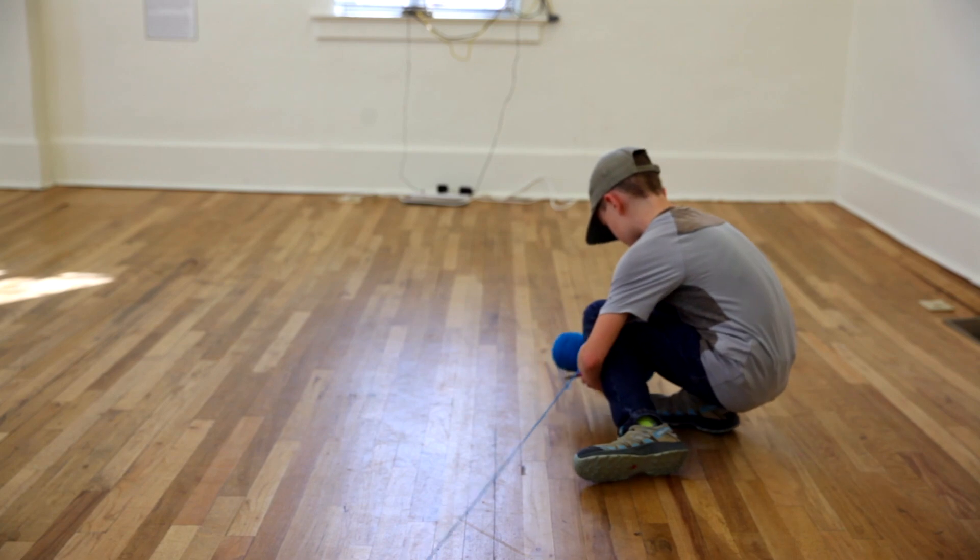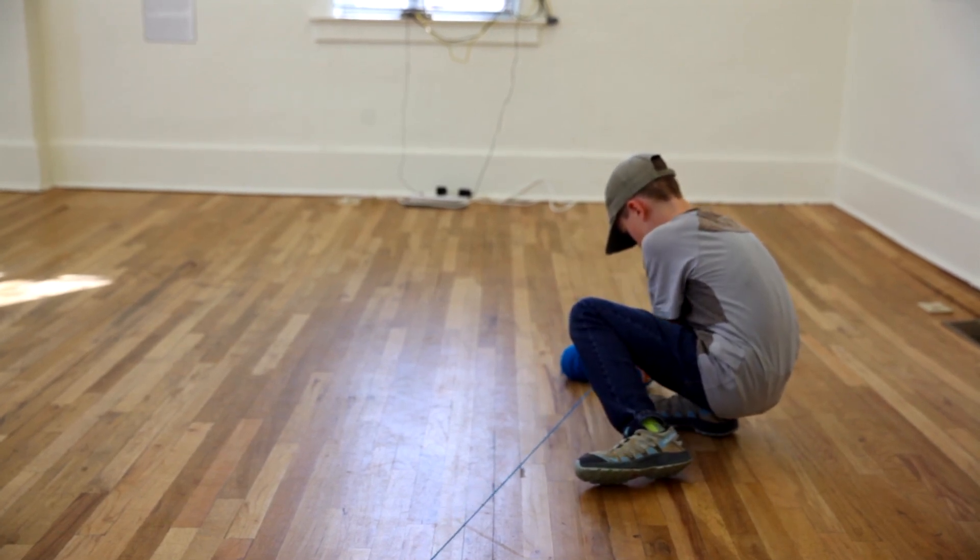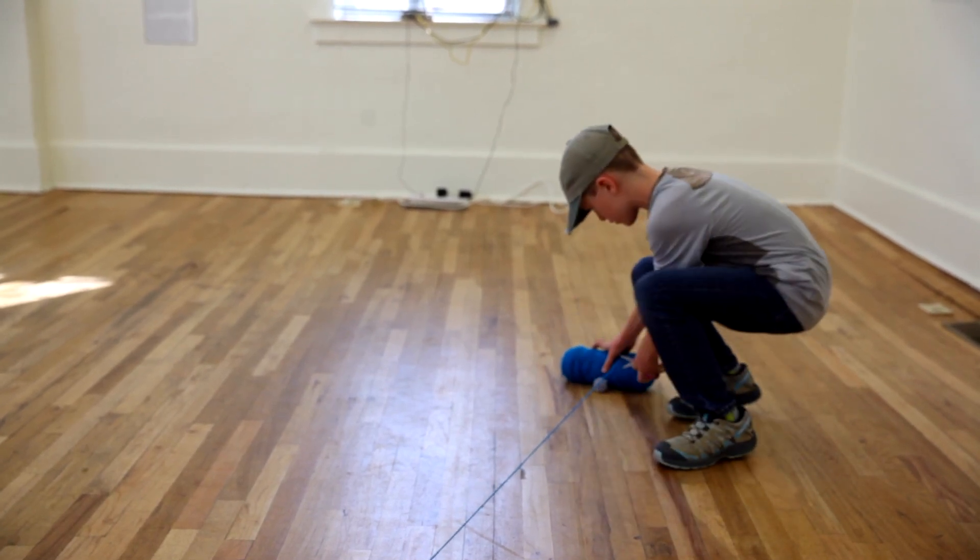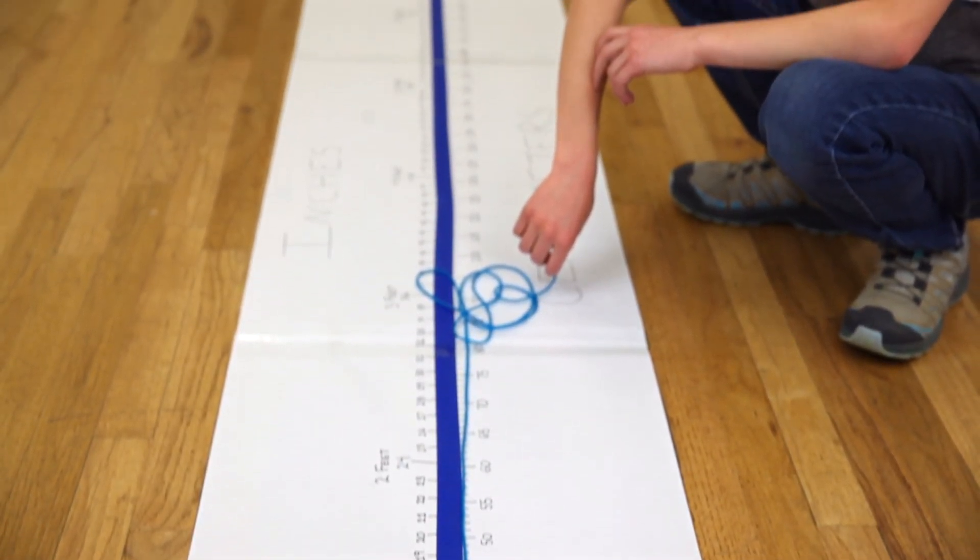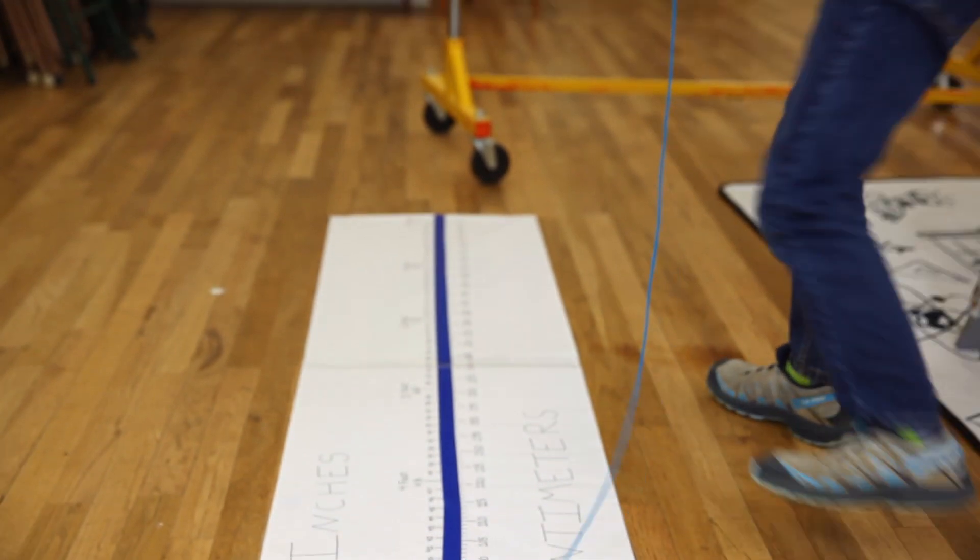Rather than using rulers, which won't be long enough, the kids will work in pairs and cut pieces of yarn that are the same length as the distance traveled. They will then measure these pieces of yarn against a line I'll mark out on the ground. This will help keep them moving and engaged.